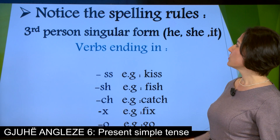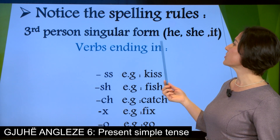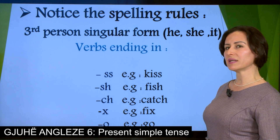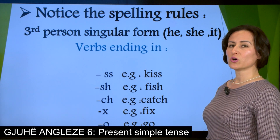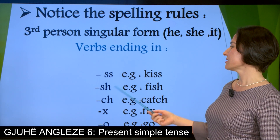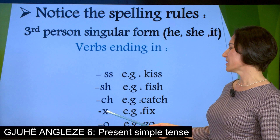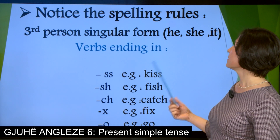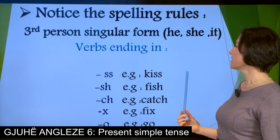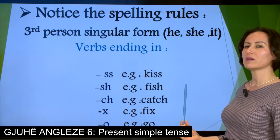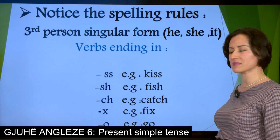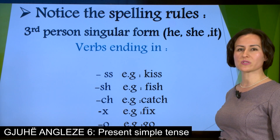It is good to notice the spelling rules of the third person singular form for he, she, and it. Those verbs which end in double S, S, SH, CH, X, and O take the -ES ending, such as: kiss → kisses, fish → fishes, catch → catches, fix → fixes, go → goes, and so on.